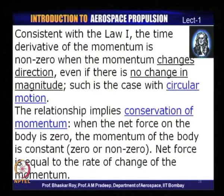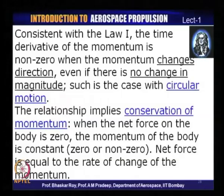Consistent with the first law, the time derivative of momentum is non-zero when the momentum changes direction, even if there is no change in magnitude. This is what happens when you have circular motion — the instantaneous velocity is always constant, but it is continuously changing its direction. This change of direction also requires an external application of force.